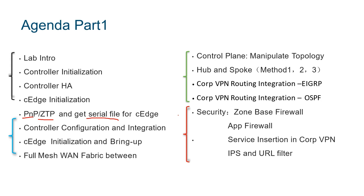After our C-Edge is online, our controller and C-Edge are authenticated through certificates and we complete the underlay environment. Once the underlay environment is complete, we naturally enter the overlay environment, because we have already implemented the overlay with the OMP protocol, forming a full mesh called a fabric network. At this point, our basic SD-WAN environment has already been set up.